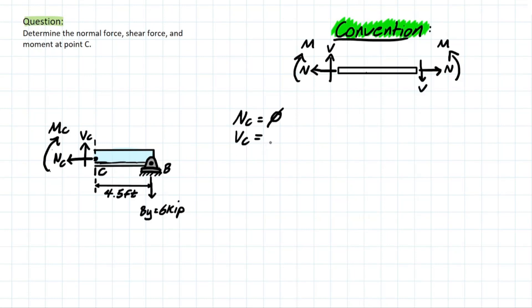We know that VC is going to equal six kips and we've drawn it in opposite direction from the reaction. So that means that our assumption in our convention is correct and we can keep that sign positive.